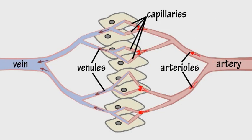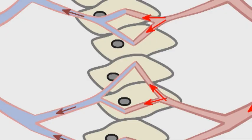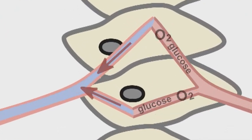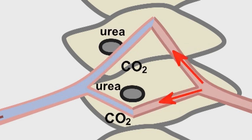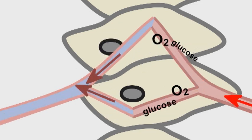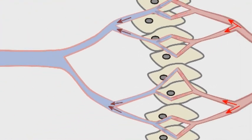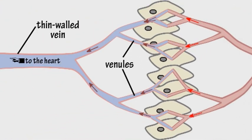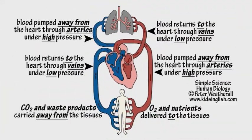Arterioles branch out into a network of very fine capillaries through which the blood continues to flow, delivering oxygen and nutrients to the tissues. Oxygen and nutrients are exchanged for carbon dioxide and other waste products, which the blood now carries away from the tissues, draining back under low pressure through thinner-walled veins to the heart to begin the whole process again.